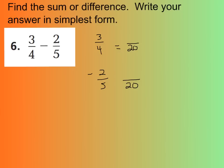So 3 fourths is equal to how many twentieths? Well let's see. 4 times 5 is 20, so 3 times 5 is 15. And 2 fifths would be 5 times 4 is 20, so 2 times 4 is 8. So now we can subtract. And you should have said your final difference is 7 twentieths. Now this is already in simplest form because 7 and 20 have only one common factor, which is 1. So it's simplified.